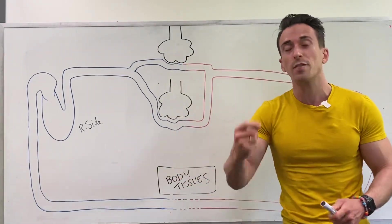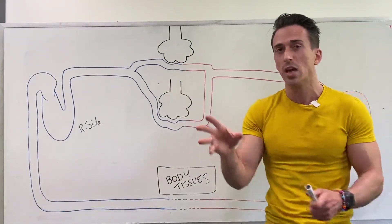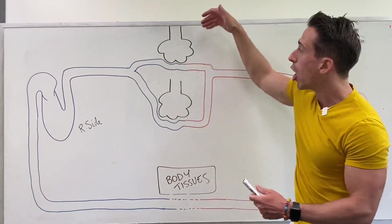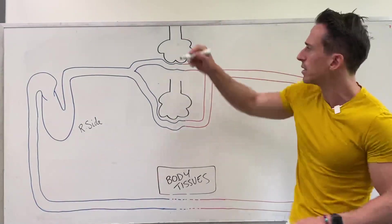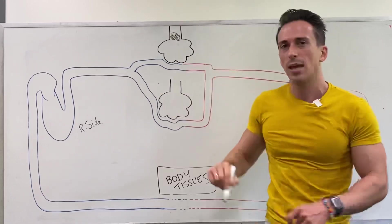Now in chronic bronchitis, which is an inflammatory disease of the airways, you can get due to the inflammation, hyper secretion of a sticky mucus, and this mucus starts to block these airways.